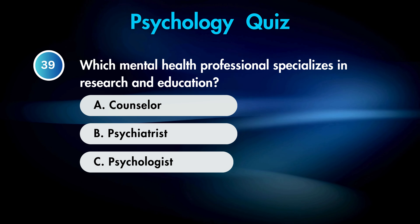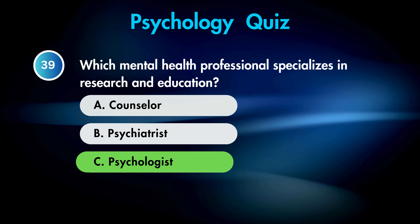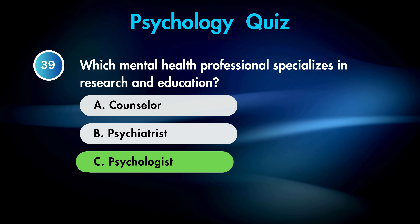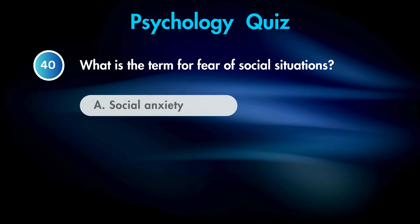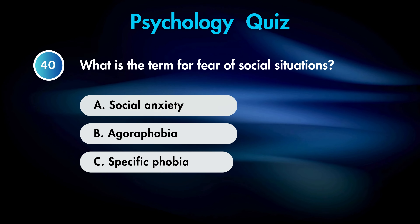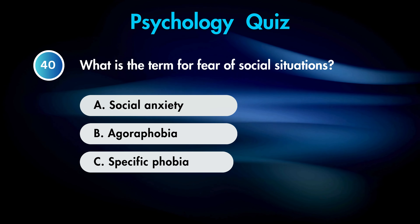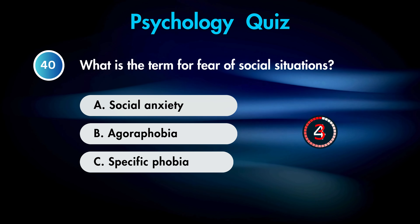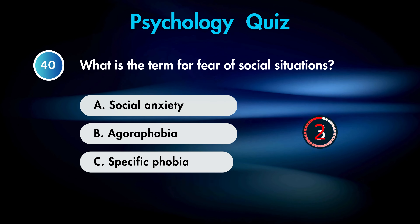What is the primary feature of social anxiety disorder? Answer A. Fear of public speaking.